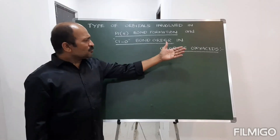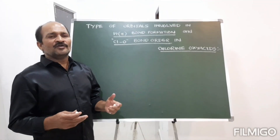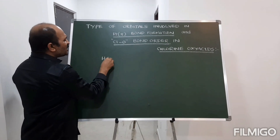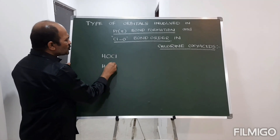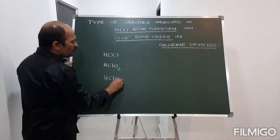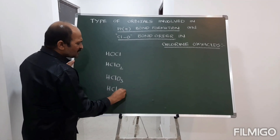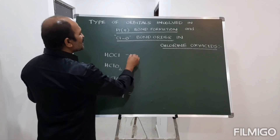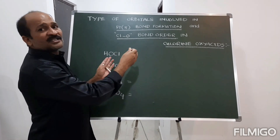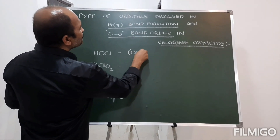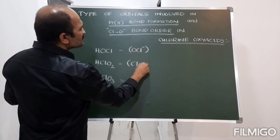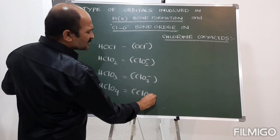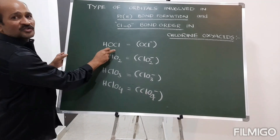Before discussing that, every student should know what the oxy acids of chlorine are. A brief explanation: HOCl, HClO₂, HClO₃, and HClO₄ are called oxy acids. All these oxy acids are stronger acids, which is why they exist as their ions — OCl⁻, ClO₂⁻, ClO₃⁻, and ClO₄⁻.